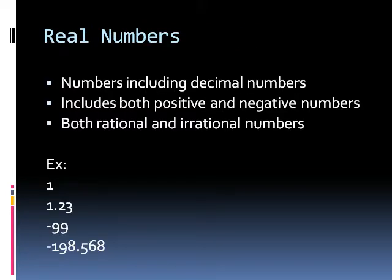So let's first talk about real numbers. Now what is real numbers? These are numbers that are both positive and negative and they could include decimal numbers as well as rational and irrational numbers. So an example of this can be 1, 1.23, minus 99, and minus 198.568.